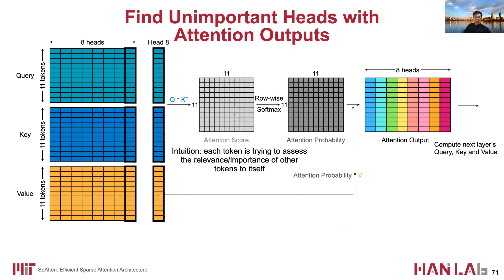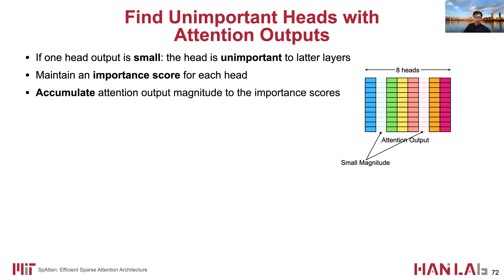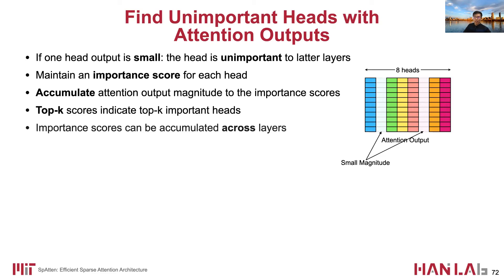Similarly, we also need to find unimportant heads. Here, the indicator is the magnitude of the head outputs. If the magnitude is small, then the head is likely less impactful to following layers. Therefore, we maintain an importance score for each head and accumulate attention output magnitude to the scores. Heads with high scores are retained, and head importance scores can also be accumulated across layers.